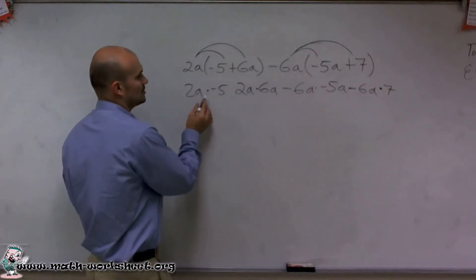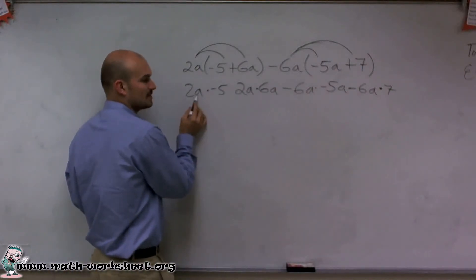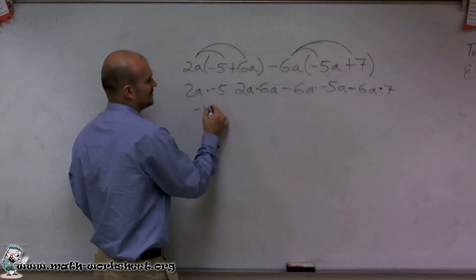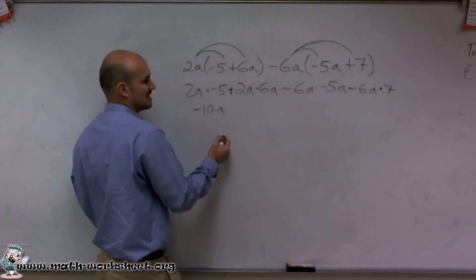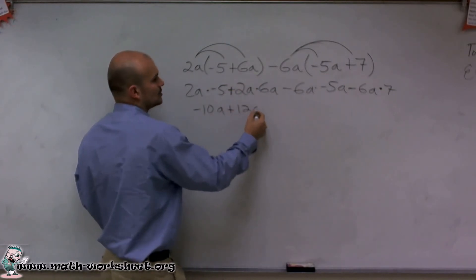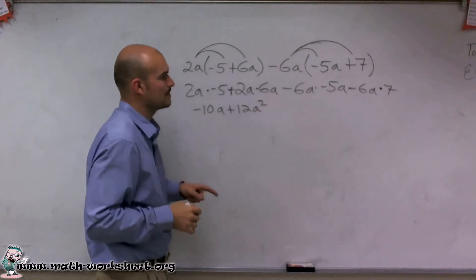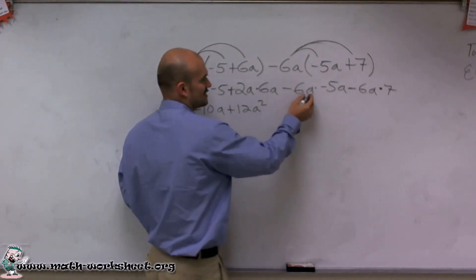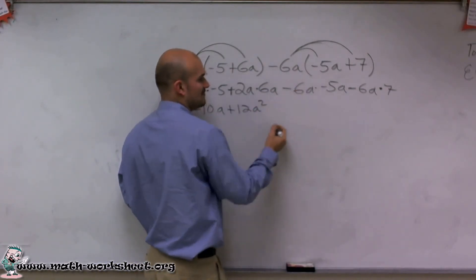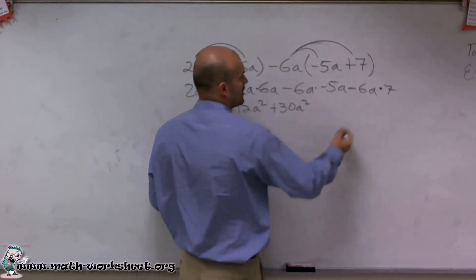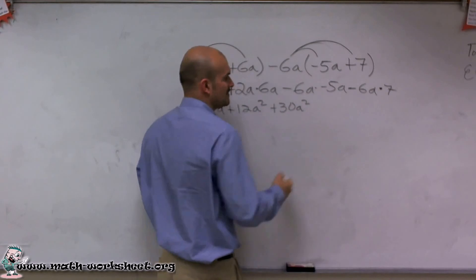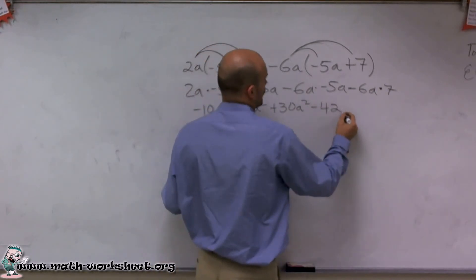When I multiply a number times a number with a variable, 2a times negative 5 is negative 10a. That's a positive 2a, so there's a plus there. 2a times 6a is positive 12a squared. Negative 6a times negative 5a is positive 30a squared. And negative 6a times 7 is negative 42a.